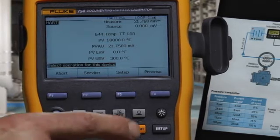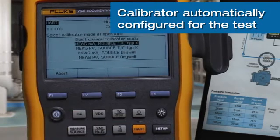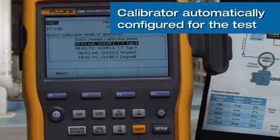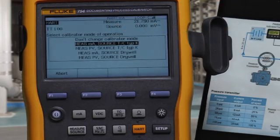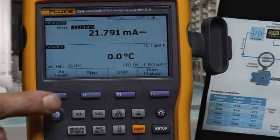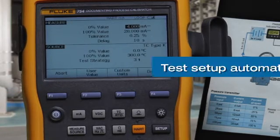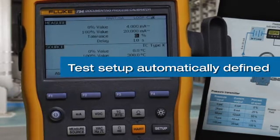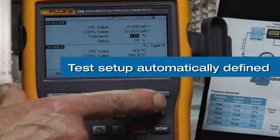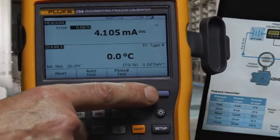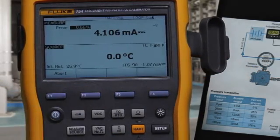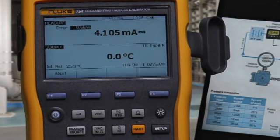To configure it for the test, we'd press HART one more time and select measure milliamps source TC Type-K, and select as found for an instrument. Input the test tolerance and select auto test to document the performance before adjustment.